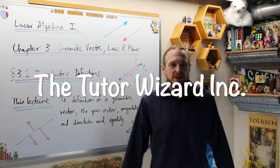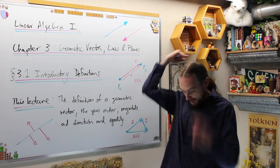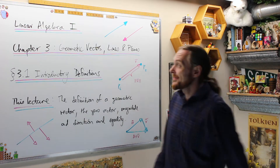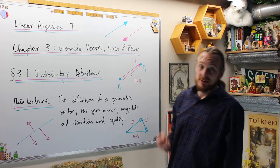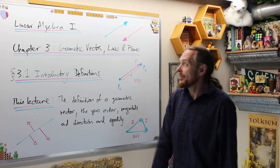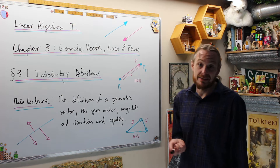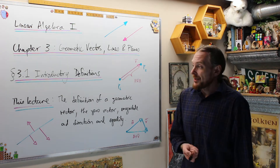Welcome back, this is the Tutor Wizard. I'm Dr. Biglanz. Please subscribe right here and hit the notification bell. This time we're doing linear algebra 1. This is chapter 3: geometric vectors, lines and planes in 3-space.